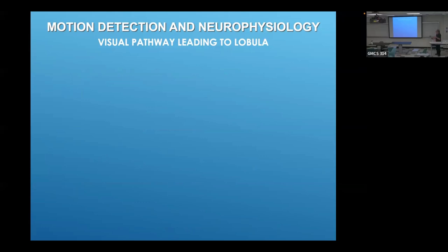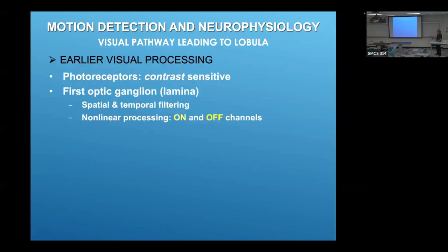I want to give a better idea of what the visual pathway looks like leading up to these cells that are fairly deep in the brain. In the earlier visual processing, it starts with photoreceptors, which could be regarded as processing elements in themselves. They're dependent on contrast rather than absolute luminance - very much like what we have in our own retina. If you read a book with a white page and black lettering, that's what it looks like whether it's out in bright sunlight or in a dim room, even though in bright sunlight the black letters might be reflecting more light to your eyes than the white page does in a dim room.